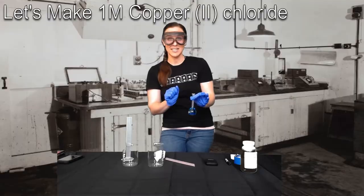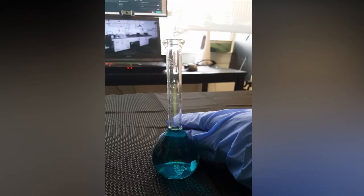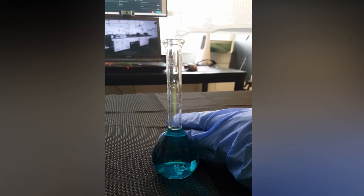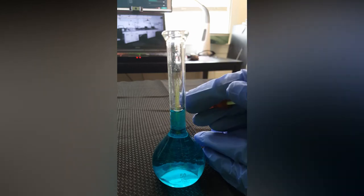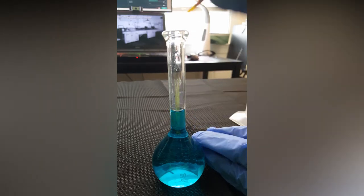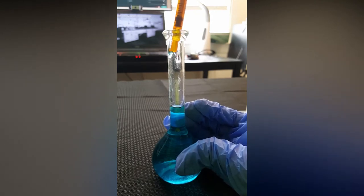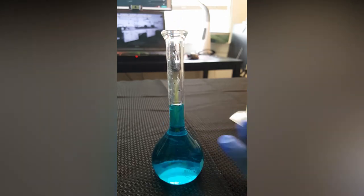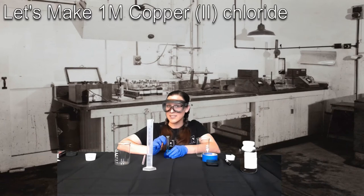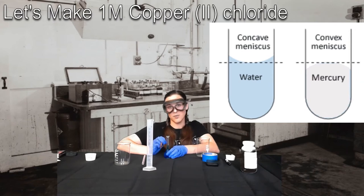So it's at this point that you want to add enough DI water to get to that line very slowly and very carefully. When you get close to this line, you're going to want to use something with smaller volume increments so that you don't overshoot it. Now remember, when you're trying to get a precise volume, you need to read it from the meniscus, i.e. from the bubble that's created due to the adhesive effects of water on glass.